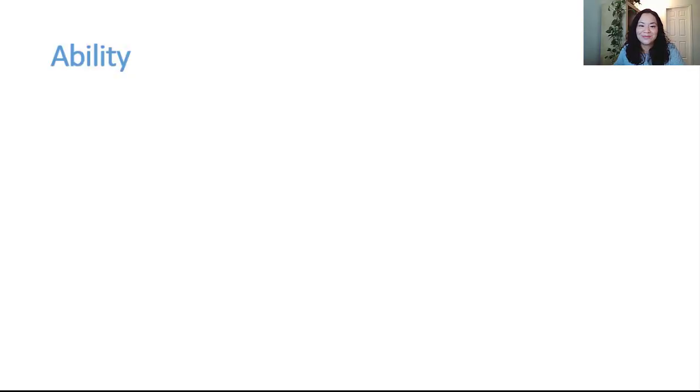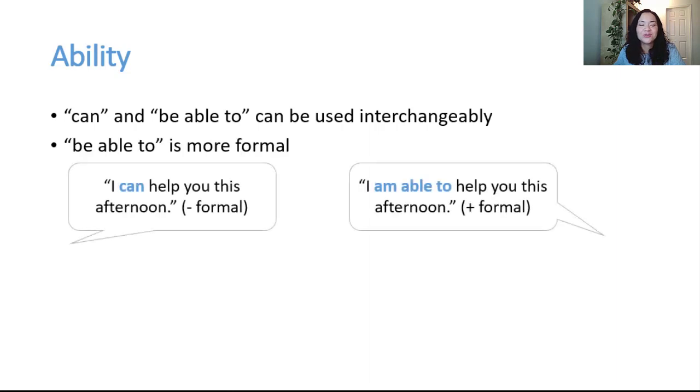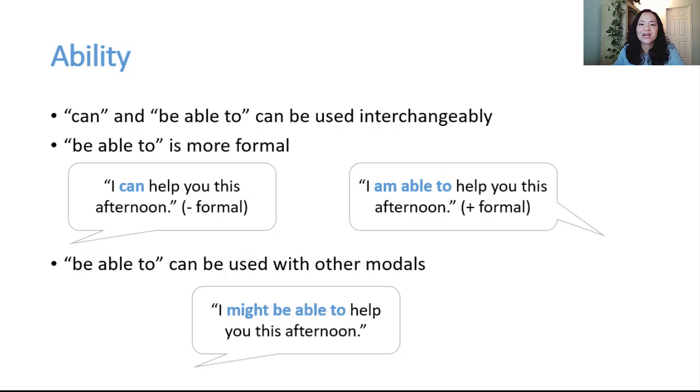Ability. Ability is one of the first things that people start with when learning modals. Can and be able to are used fairly interchangeably, although be able to is more formal. I can help you this afternoon versus I am able to help you this afternoon. Also, we use be able to with other modals because it's one of the few modals that can be used in conjunction with another modal. I might be able to help you this afternoon.